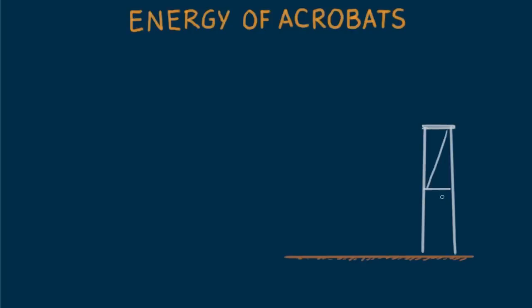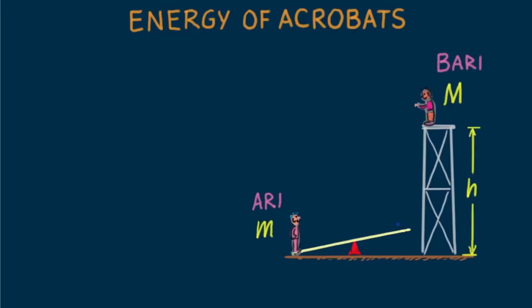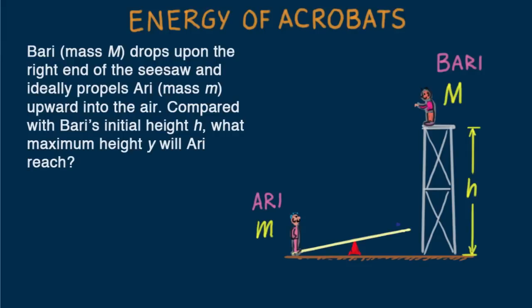Now here's an intriguing problem with a simple solution if the conservation of energy is invoked. Acrobat Bari stands atop an elevated platform. He steps off the platform and lands on the end of a seesaw that propels his friend Ari into the air as routinely happens in a circus. Now here's the problem to be solved.